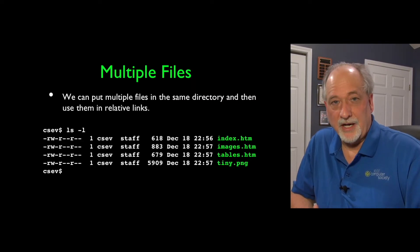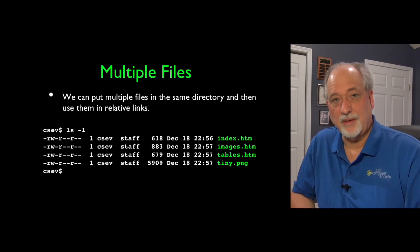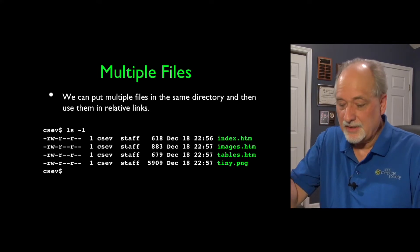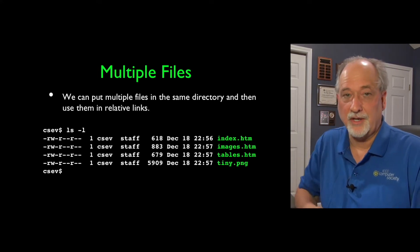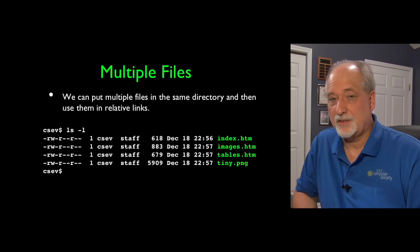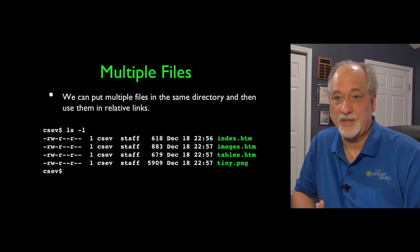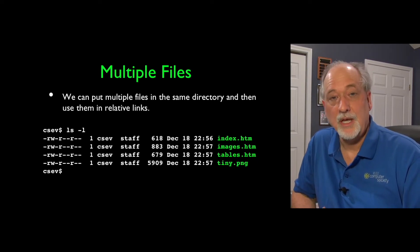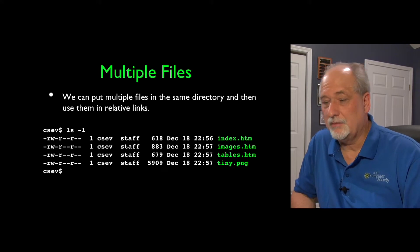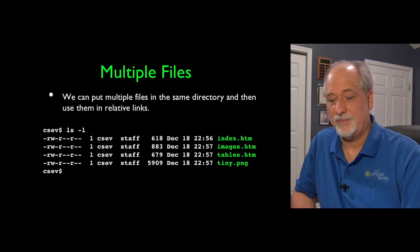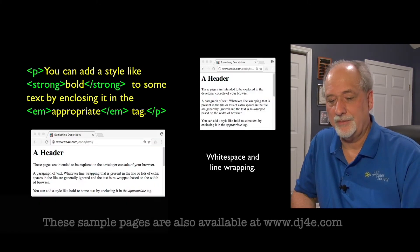We can put multiple files in the same directory and use them in what are called relative links. We can easily create links between one file and another. If you look at the zip file, you've got a whole bunch of files in the same directory, and with little anchor tags, they point back and forth between each one.